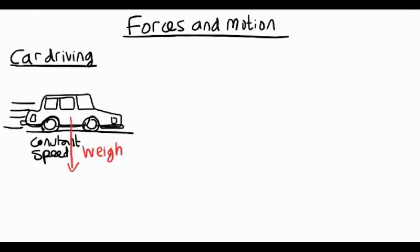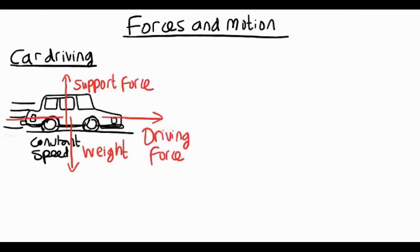So whatever weight is pulling down, there must be an equal and opposite support force from the road pushing back up. The driving force pushing it forward from the engine must be equal and opposite to the air resistance, which is acting against a car's movement.